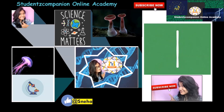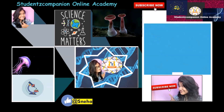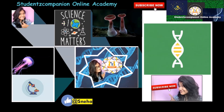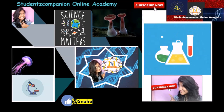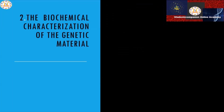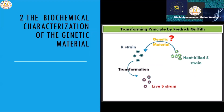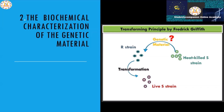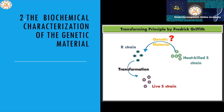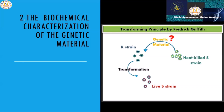Hello and welcome to my channel, Students Companion Online Academy. My name is Neha and I prepare free videos for students to assist them in virtual learning. In today's video we are going to describe the biochemical characterization of the genetic material. This video is a continuation of our last video session on the transforming principle by Frederick Griffith, where we showed how the heat-killed S strain transferred genetic material into the R strain, leading to transformation of R strain into live S strain. If you want to refer to our last video, the link is provided in the description below.